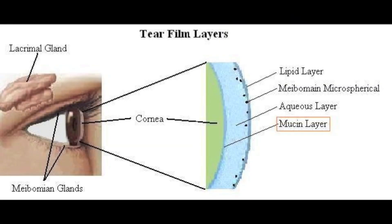The innermost layer of the tear film is the mucin layer and it is the layer that directly contacts the outer surface of the corneal epithelial cells. This layer is produced by the goblet cells within the conjunctiva. Mucin is synonymous with mucous; however, many of the mucin molecules in this layer are transmembrane, meaning that they are associated with the epithelial cells versus being free-floating like some mucin molecules. This is important because it allows the tear film to evenly coat the cornea and interacts with the aqueous layer to prevent the tear film from quickly flowing off the cornea.